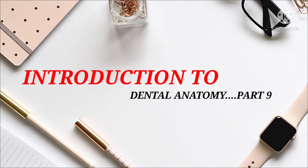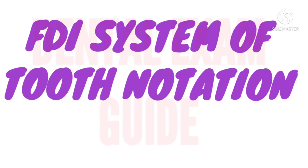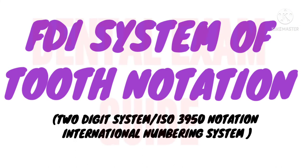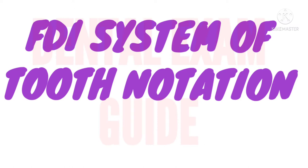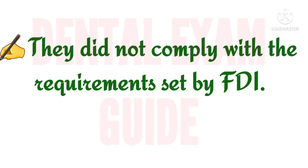Hi everyone, welcome back to Dendel Exam Guide. This is our third video on tooth numbering systems. Today we will be learning about the FDI system of tooth notation. We have seen that both previously used systems — the Zsigmondy-Palmer system and the Universal Numbering System — had their own disadvantages and did not comply with requirements set by FDI.